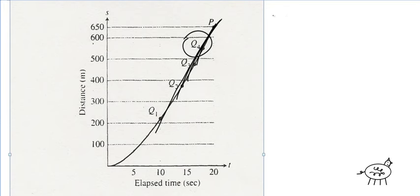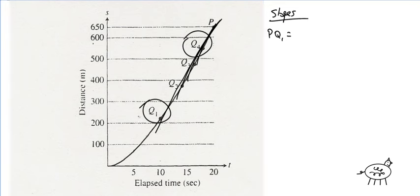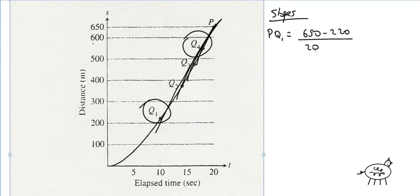So if I want to estimate the slopes, I can have pq1, and that's equal to, again, kind of pulling this stuff off the graph here, this guy right here is going to be 650, that's p, right? minus q1, which is, I'm going to say about 220, over the time, which is 20 for p and 10 for q1. So if I divide that out, I get 43 meters per second. That's the slope for pq1.